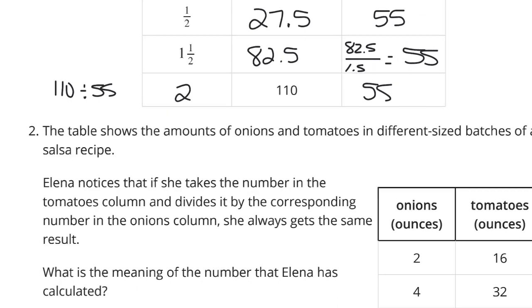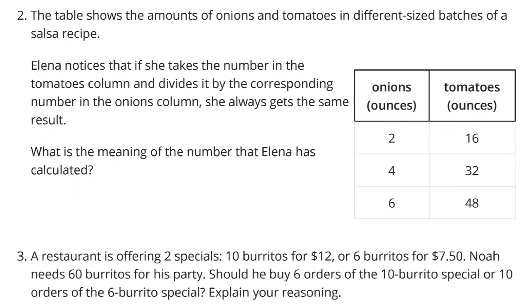Question 2. The table shows the amounts of onions and tomatoes in different sized batches of the salsa recipe. Elena notices that if she takes the number in the tomatoes column and divides it by the corresponding number in the onions column, she always gets the same result. Well, 16 divided by 2 is 8. 32 divided by 4 is 8. And 48 divided by 6 is 8. And so, what does this 8 mean? Well, that would mean that 8 ounces of tomatoes per 1 ounce of onions.